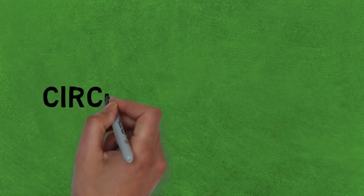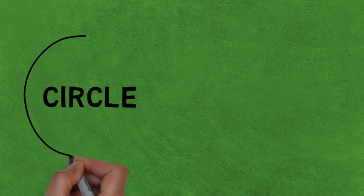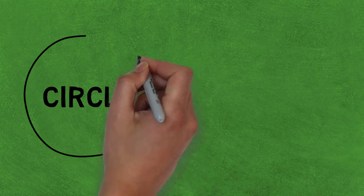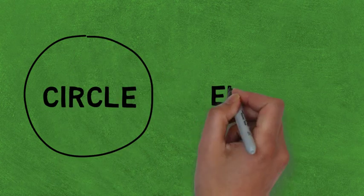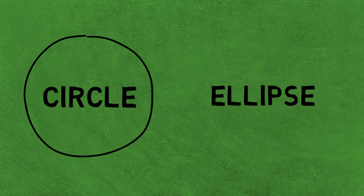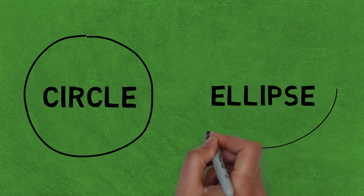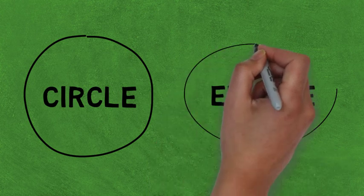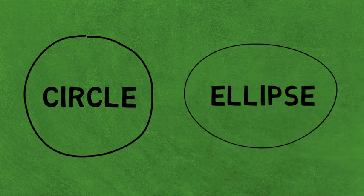A circle is perfectly round, with all points being equidistant from the center. On the other hand, an ellipse is not perfectly round and is more oval-shaped. An ellipse is elliptical.